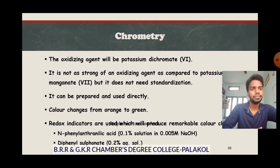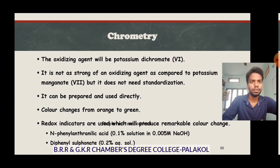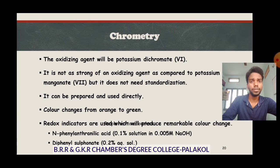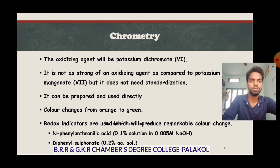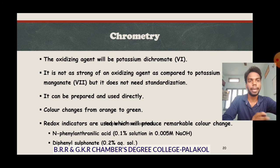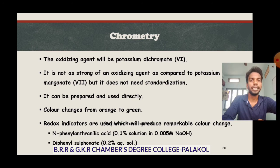Second titration type: dichromatometry. Here potassium dichromate (K₂Cr₂O₇) is the oxidizing agent. It is not as strong an oxidizing agent as KMnO₄, but it does not need standardization because it is itself a primary standard — it can be prepared and used directly. The color changes from orange to green during the titration. Redox indicators used are N-phenylanthranilic acid or diphenylamine diphenyl sulfonate.